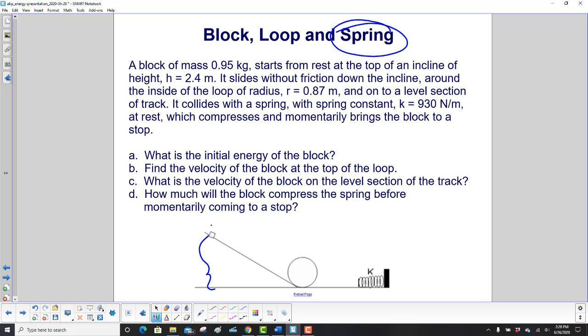It slides without friction down the incline onto a level section of track. It then collides with the spring, with spring constant of 930 N per meter. What happens is it pushes against the spring, the spring collapses as it's pushing it, and then stops.